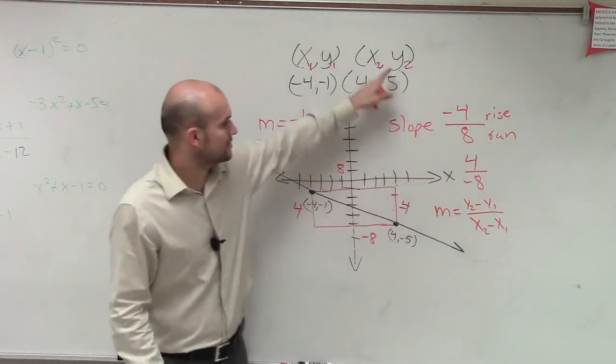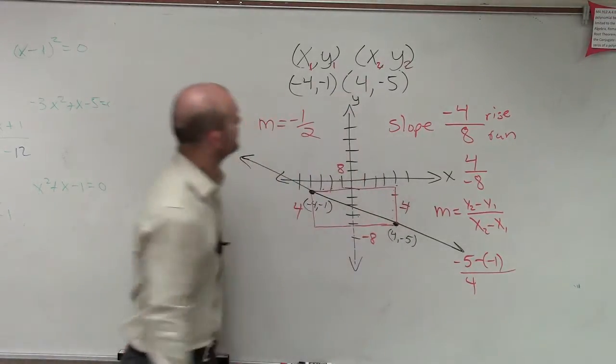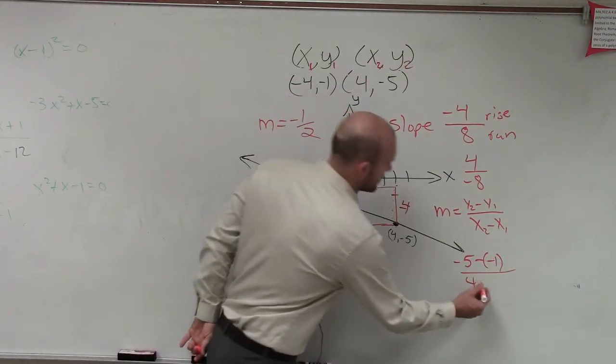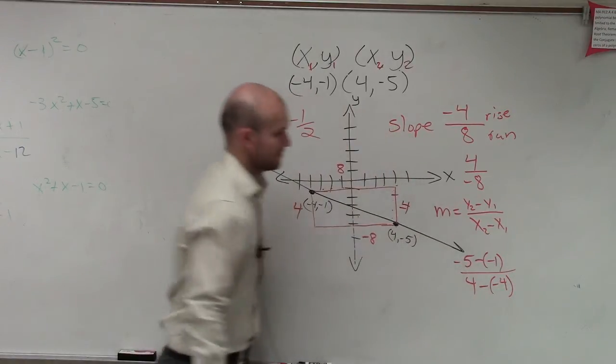So what's y2? Negative 5 minus y1, which is negative 1. And make sure you guys put this stuff in parentheses when you do this. What's x2? 4 minus negative 4.